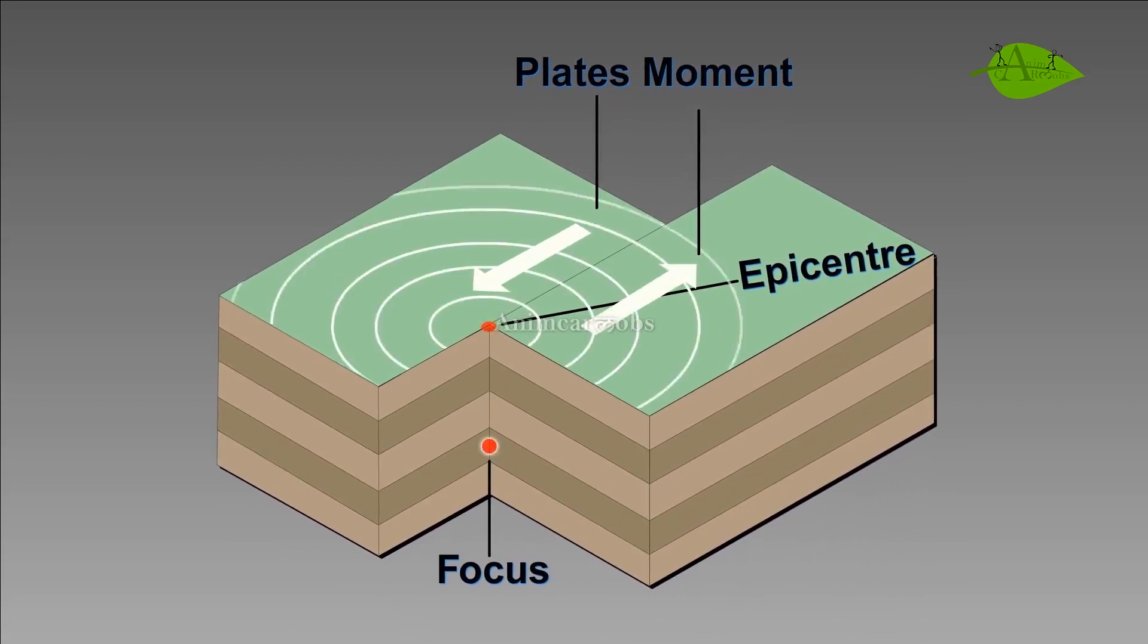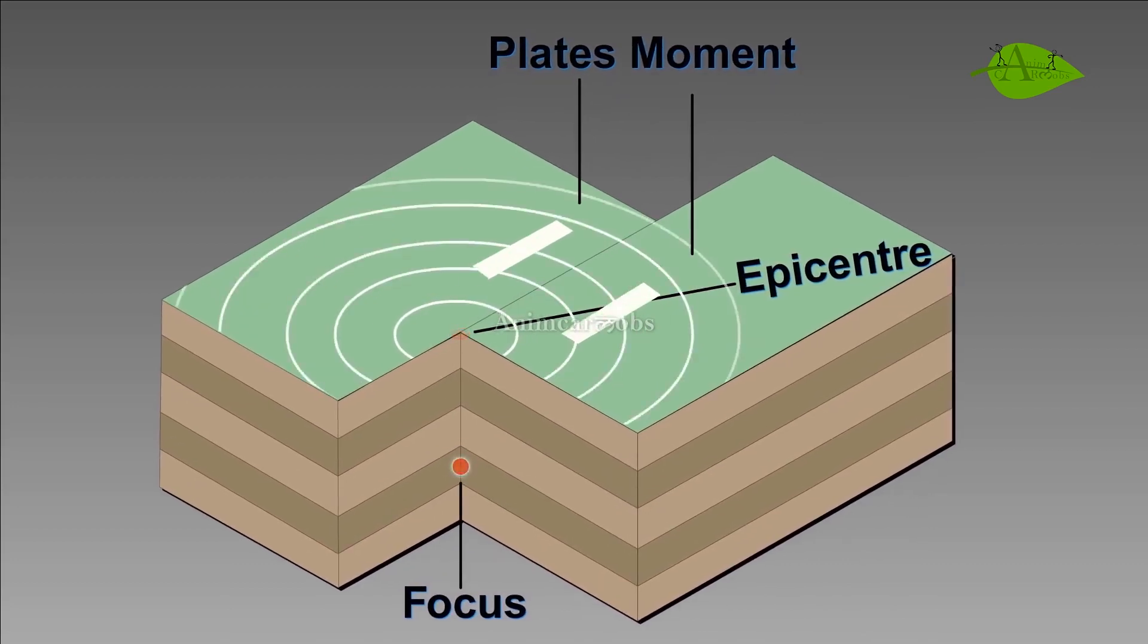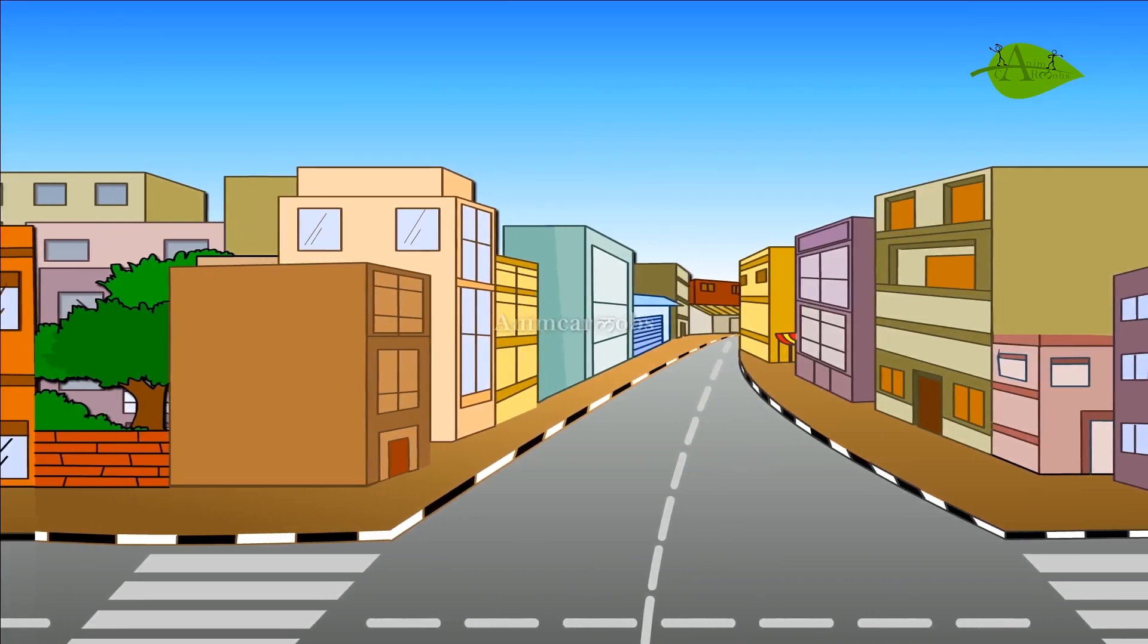The point on the surface directly above the focus is called the epicentre. From the epicentre, the energy waves travel in different directions on the Earth's surface causing vigorous movements on the surface of the Earth, known as an earthquake. A powerful earthquake can destroy an entire city within seconds.